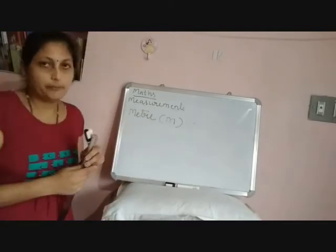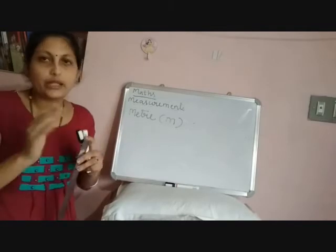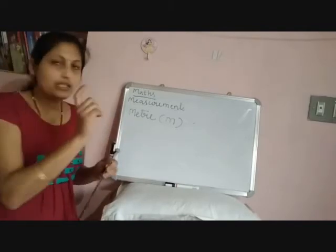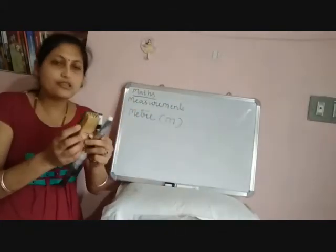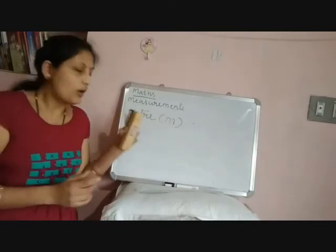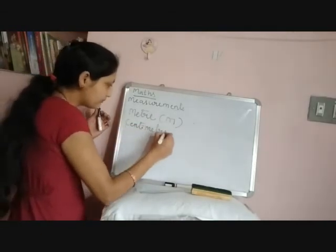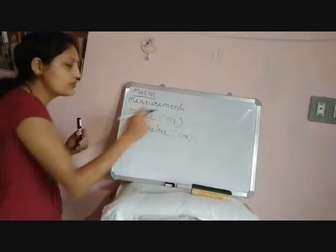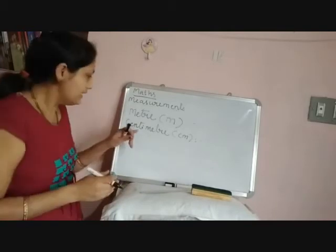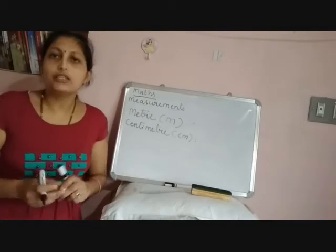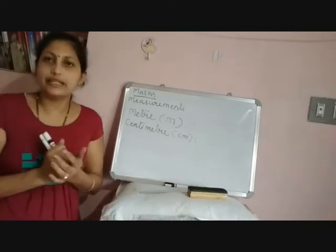Meter is the standard unit of length used to measure longer lengths like the length of a wall or the length of a door. Smaller lengths, like the length of a pen or a duster, are measured using a smaller unit called centimeter, shortly written as 'cm'.